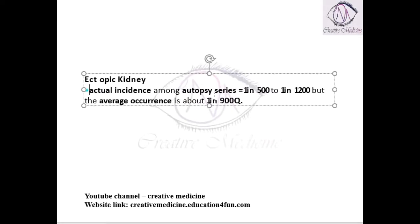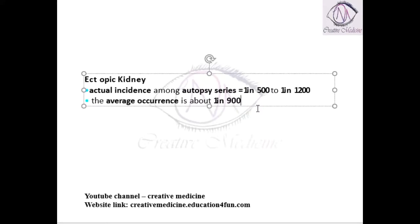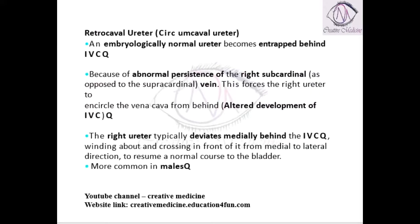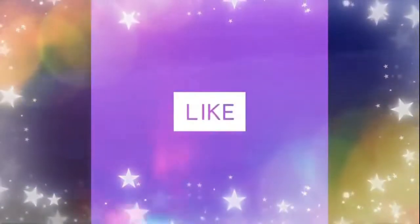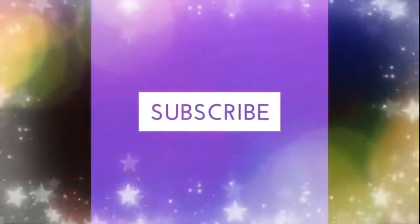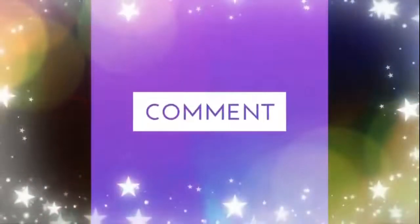In autopsy series, ectopic kidney is found in 1 in 500 to 1 in 1200, but on average the occurrence is found in 1 in 900 population. Thank you for watching.